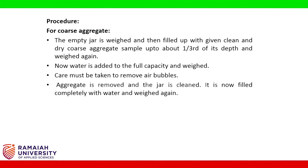Procedure for coarse aggregate: the empty jar is weighed and then filled up with clean and dry coarse aggregate sample up to about one third of its depth and weighed again. Water is then added to full capacity and weighed — care must be taken to remove air bubbles. The aggregate is removed and the jar is cleaned, then filled completely with water and weighed again.